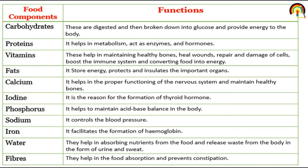Protein is also a macronutrient. It helps in metabolism — both catabolism and anabolism. Proteins act as enzymes, and hormones are also protein in nature, so protein can act as a hormone. Vitamins help in maintaining healthy bones — vitamin D is responsible for that. Vitamin K helps heal wounds, repair and damage of cells, and boost the immune system. Vitamins are micronutrients. Fat stores energy, protects, and insulates important organs.